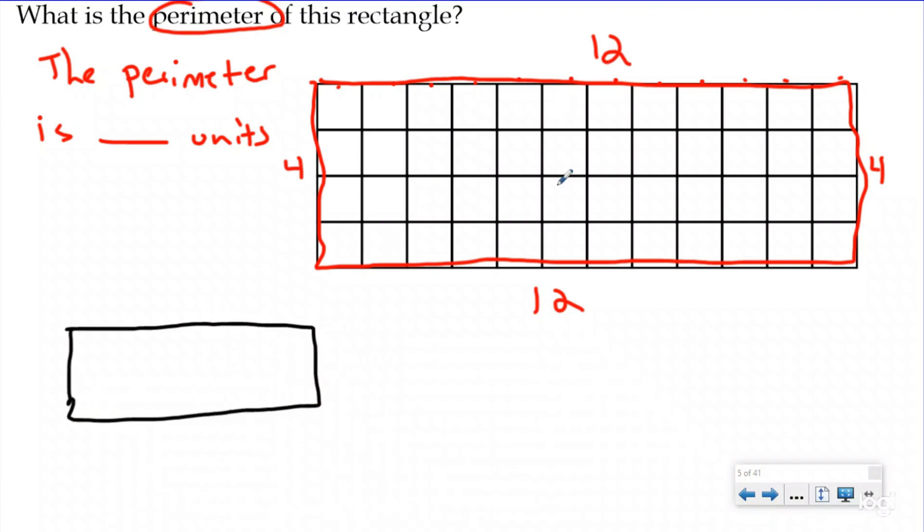And I know that I have two sides are the exact same. So I need two groups of 12. And then I had two sides that were both 4. And if I want to know the total of those, I want to know the perimeter, I need to add all of those together. So when I add all of those together, my perimeter is 12, 24, 28, 32 units.